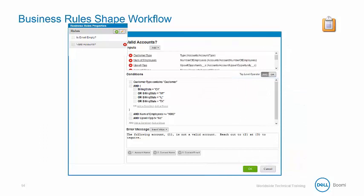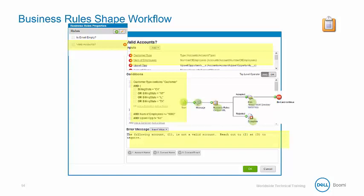Let's review the business rules shape workflow. Business rules are executed in the order that they're organized in the rules list. In this example, we have a rule 'is email empty' before the 'valid accounts' rule, so that rule would execute to completion first. Within each rule, inputs are calculated, fields are gathered, and functions are executed. Conditions are executed and results are labeled as true or false. The error messages for false results are aggregated. The source document is processed down the appropriate path, and if the document is rejected, an error message XML is attached as a business rules result message document property.